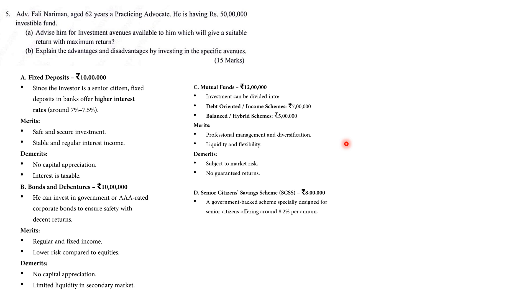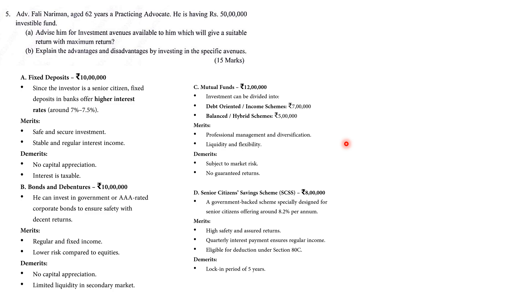Senior Citizen Savings Scheme — 8 lakhs: This is a government-backed scheme offering up to 8.2% interest annually. Merits: high safety and assured return, quarterly interest payments ensure regular income, and eligible for deduction under Section 80C. Demerits: locked-in period of 5 years, and premature withdrawal attracts a penalty.